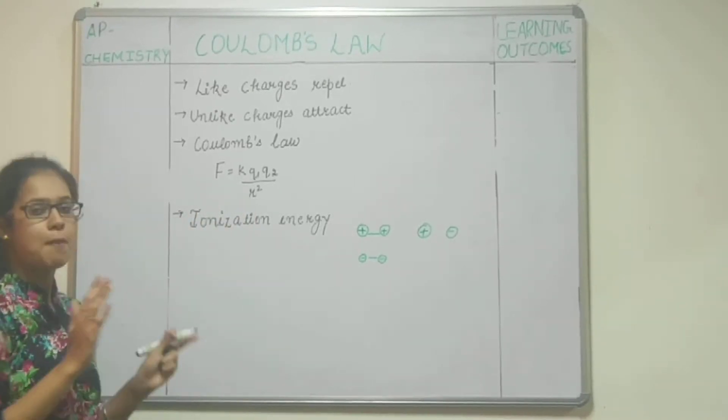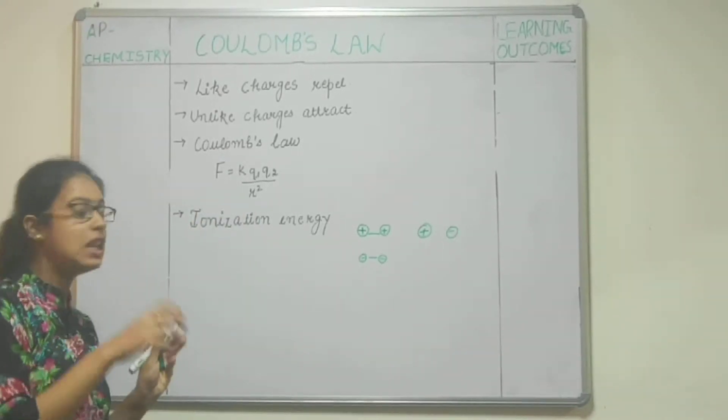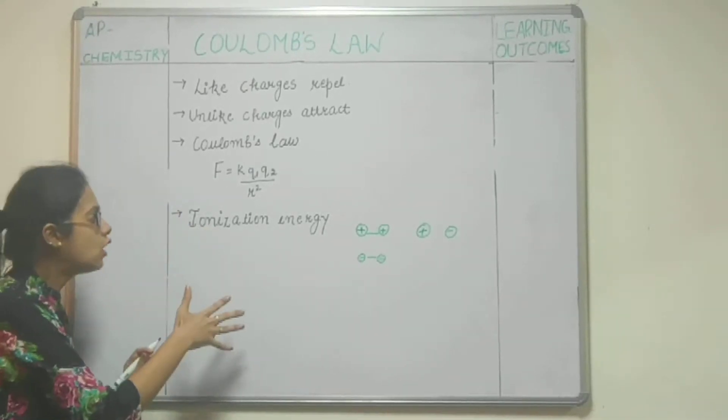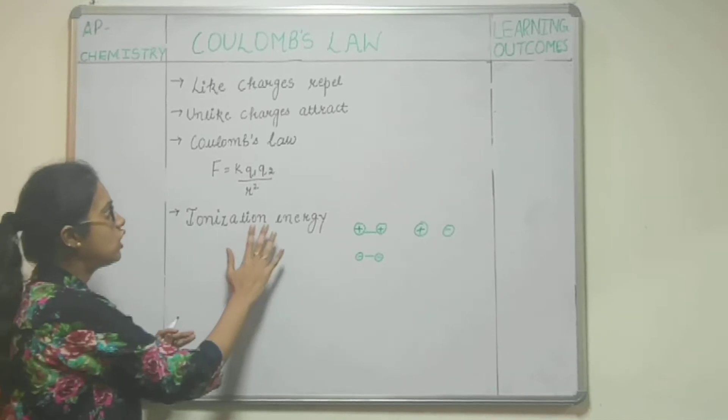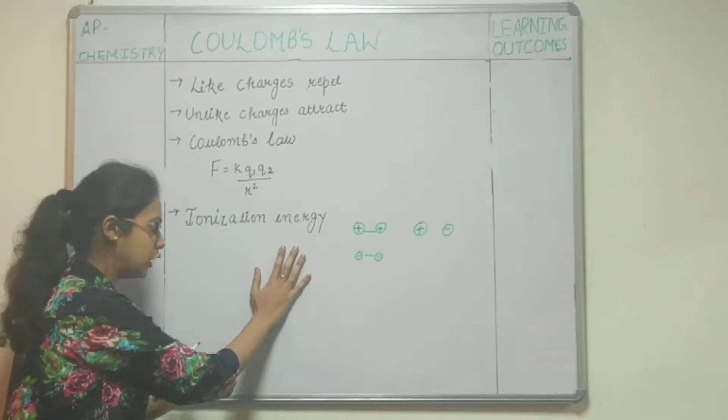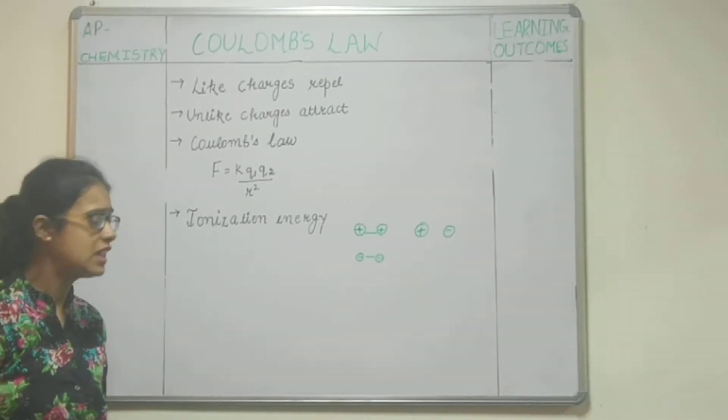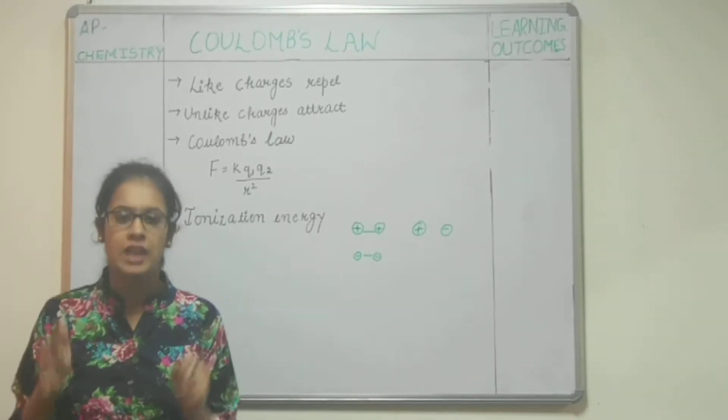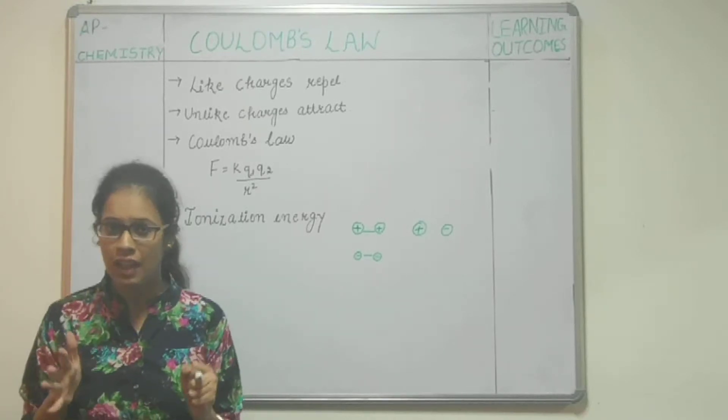It discusses how one particle exerts force over another particle. So, Coulomb's law helps in determining ionization energy. What is ionization energy? It is the removal of an electron from the outermost shell of a gaseous isolated atom.